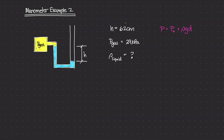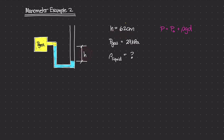In this example we are going to look at this manometer, and it's going to be a little different than the last example. We're given the gas pressure which is 29 kilopascals, and we're given this height of 62 centimeters, which is the difference between the open surface on the liquid and the point where the gas meets the liquid. This height difference is 62 centimeters, and in this question we want to determine what the rho of the liquid is — the mass density of the liquid contained inside this manometer.